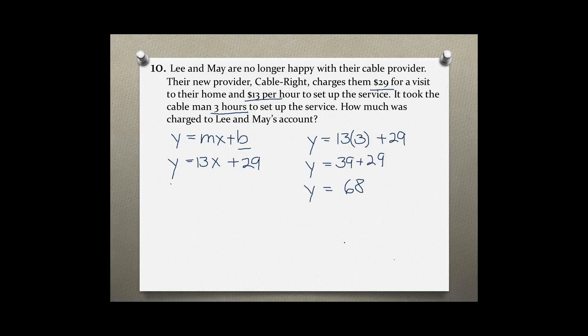And y equals 68. This means that Leigh and May were charged $68 when CableRite was setting up their new service.